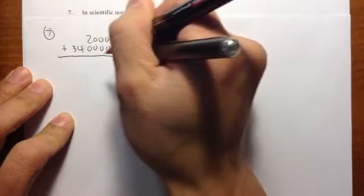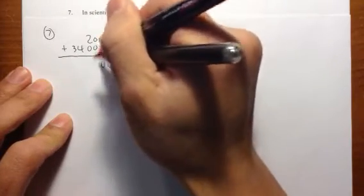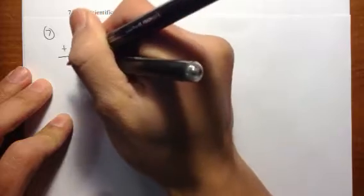When we add, we get this is 0, this is 0, this is 0, this is 2, and then we have a 4, we have a 3.